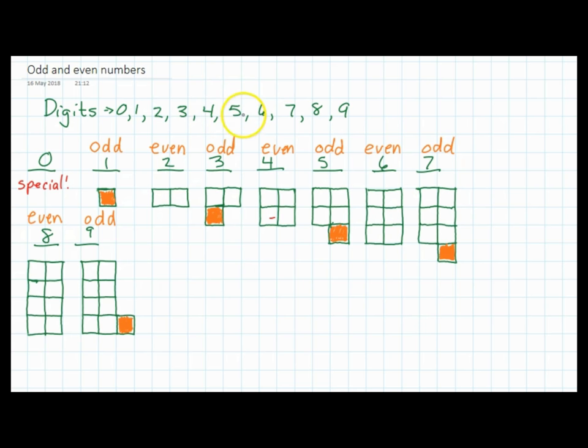Each one of these digits can also be used to represent a number. For example, this could be the digit five but it could also be the number five. I've written the numbers zero to nine here. Zero is a special case so we're not going to talk about zero right now.